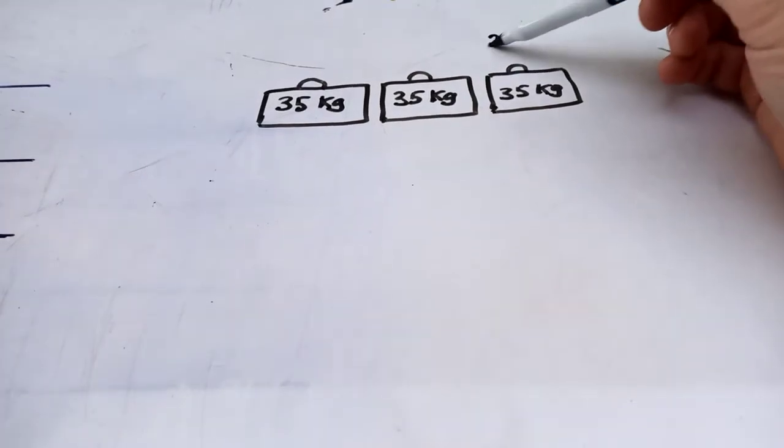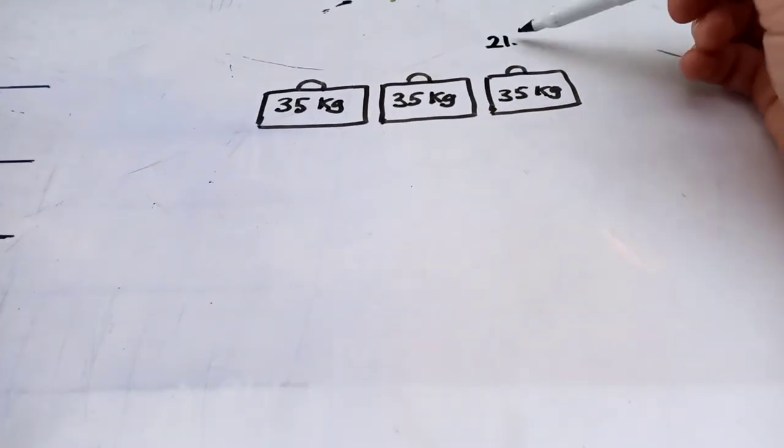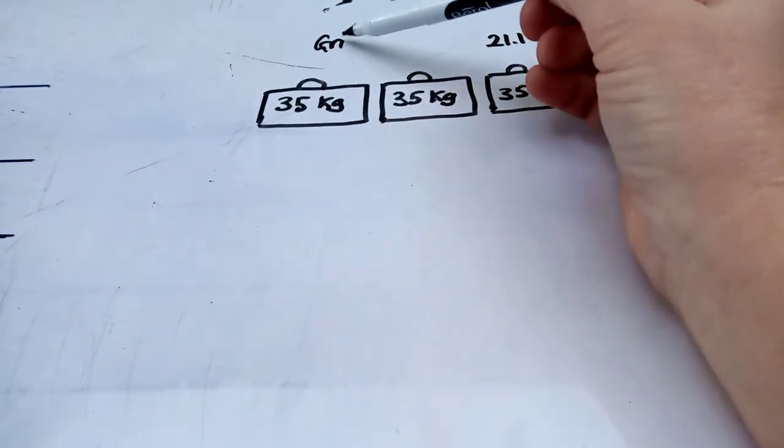Good morning, Year 3. It's Thursday the 21st of January and in Maths today we're looking at using the grid method for multiplication.